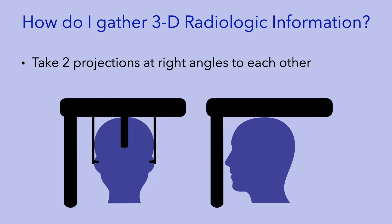Remember that the approach of using two radiographs at right angles is also used in cephalometric imaging. In this clinical situation, we would take a lateral cephalometric radiograph and a posterior-anterior cephalometric radiograph and combine the information from both these images to better appreciate the three-dimensional anatomy of the craniofacial structures.